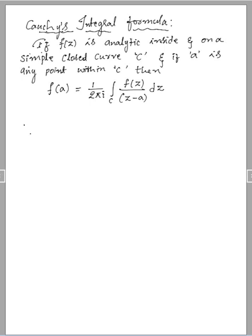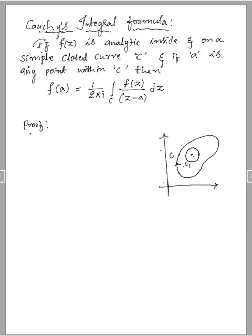Now we will go with proving that theorem. First, consider the pictorial representation of the curve we are considering. We should consider a simple and closed curve c. Inside that curve c, there is a point called a. We consider this point as a, and draw a circle, which I will name as curve c1, which is a closed curve c1. This point is called z equal to a.